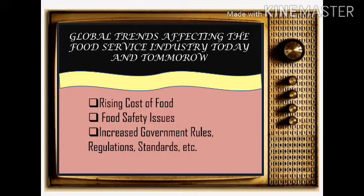More governments on a global basis are putting more and more rules and regulations in place to help control and monitor any food safety related issues. As the global food supply chain continues to expand and grow, food safety sourcing issues will become an even bigger issue in the future than they are now.